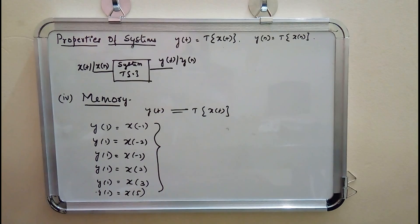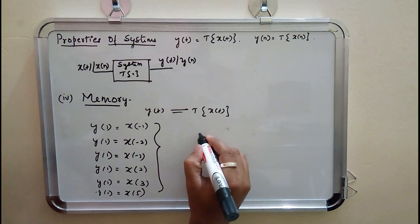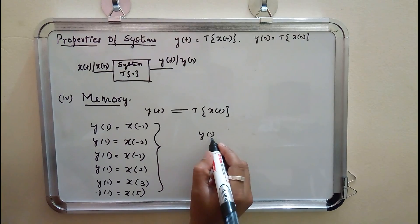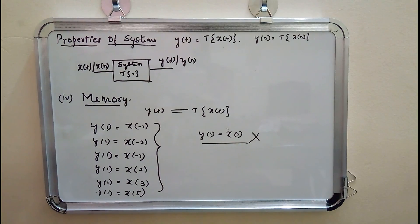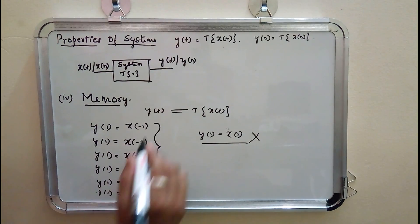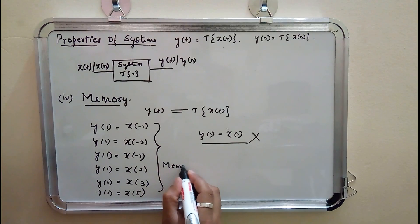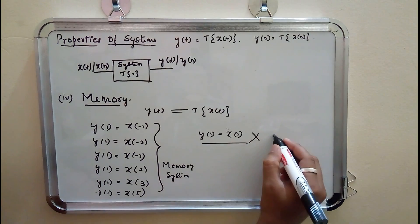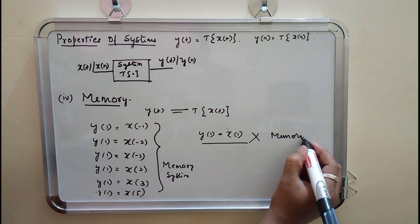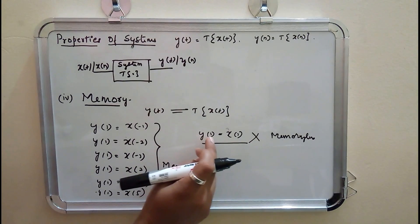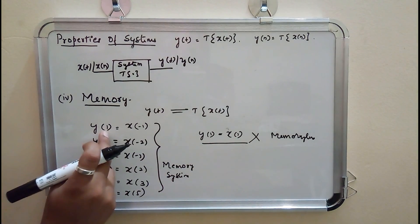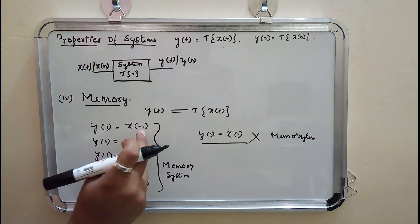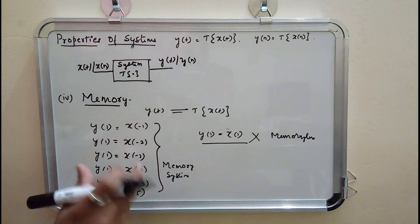If these conditions — output depending on past or future input — are satisfied, then the system is said to have memory. A system is called memoryless when the output at one instant depends only upon the input at that same instant. If the output depends on input at a past or future instant, then the system has memory.